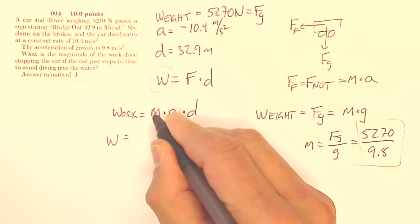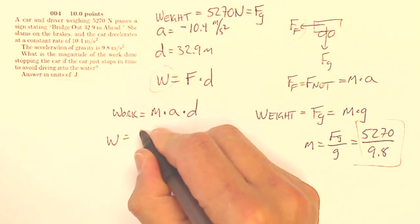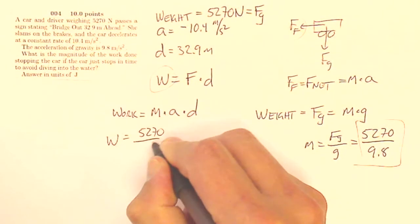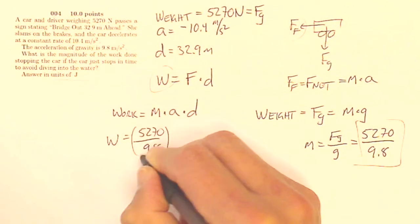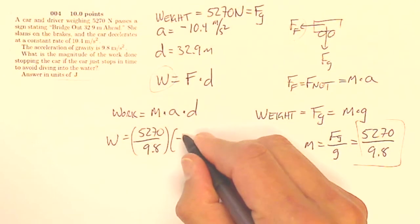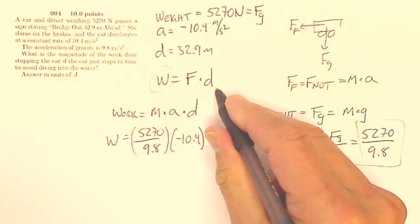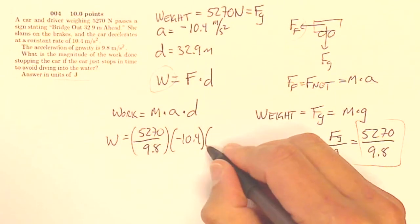So my work is going to be my mass of 5270 over 9.8 times my acceleration of negative 10.4 times my distance, which is 32.9 meters.